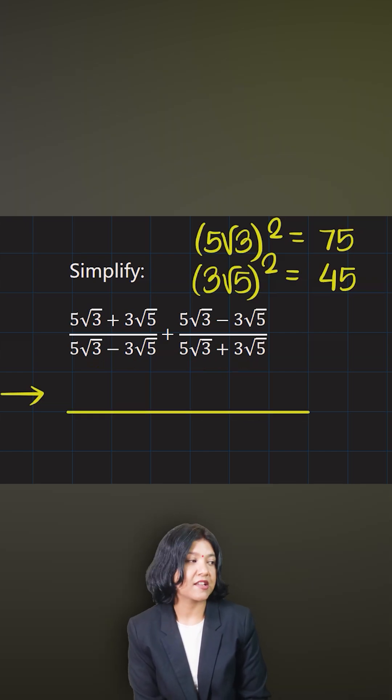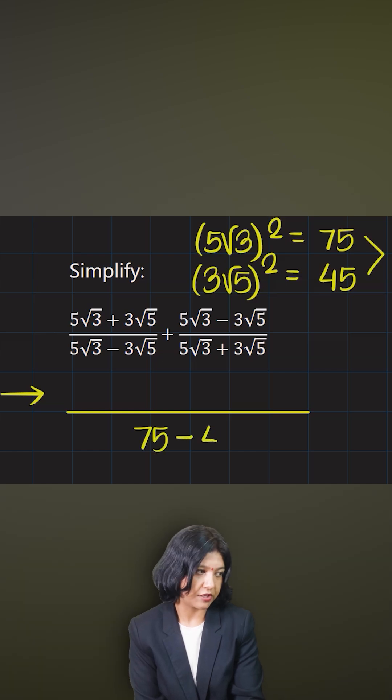Which means at the bottom what you'll be doing is just you have a minus b and a plus b, which is to take the difference of the squares. Because I have found the squares already, I'll take the difference at the bottom.